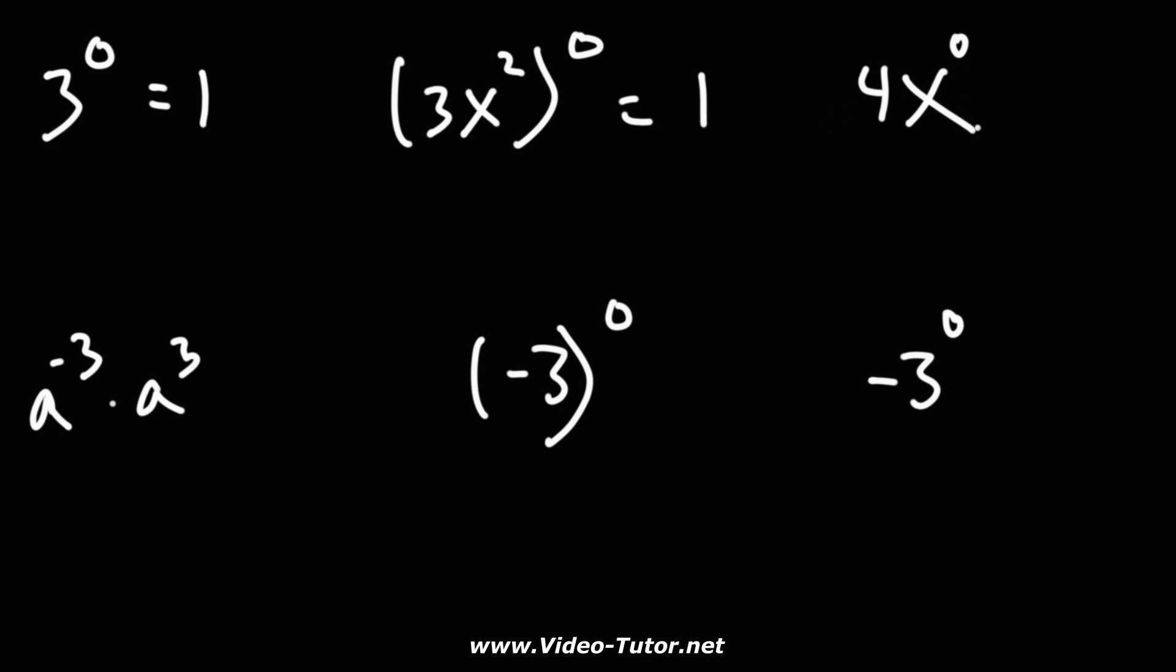Now, four x to the zero, the zero applies to the x but not the four. The four has an invisible one. If you don't see an exponent, always assume it's a one. So four to the one is four, x to the zero is one, so this becomes four times one, which is four.